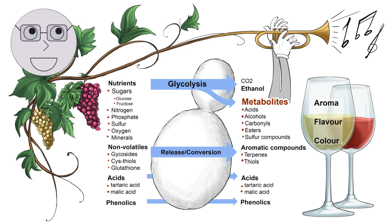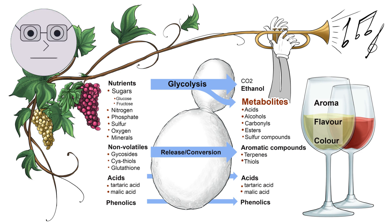Acids are also important in wine production. Grapes contain a variety of acids, including tartaric acid, malic acid, and citric acid. These acids contribute to the wine's flavour and help to balance the sweetness of the sugar.